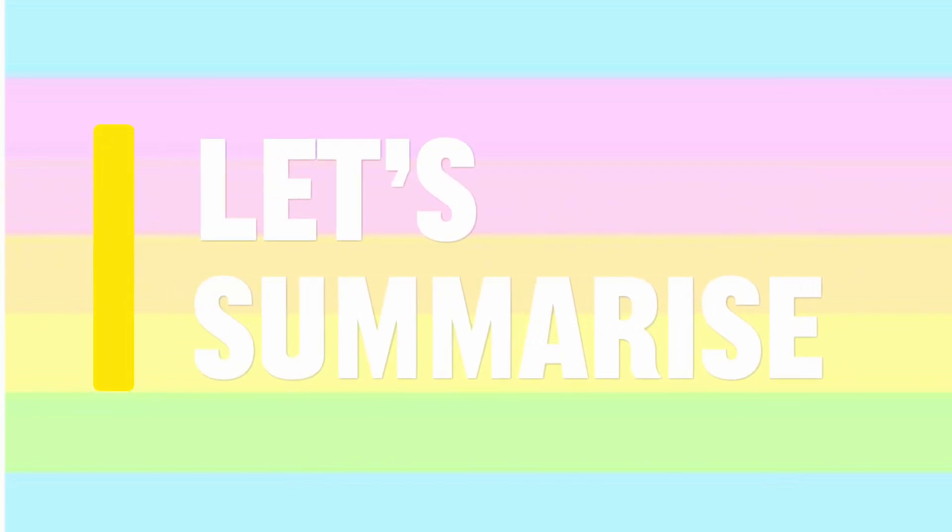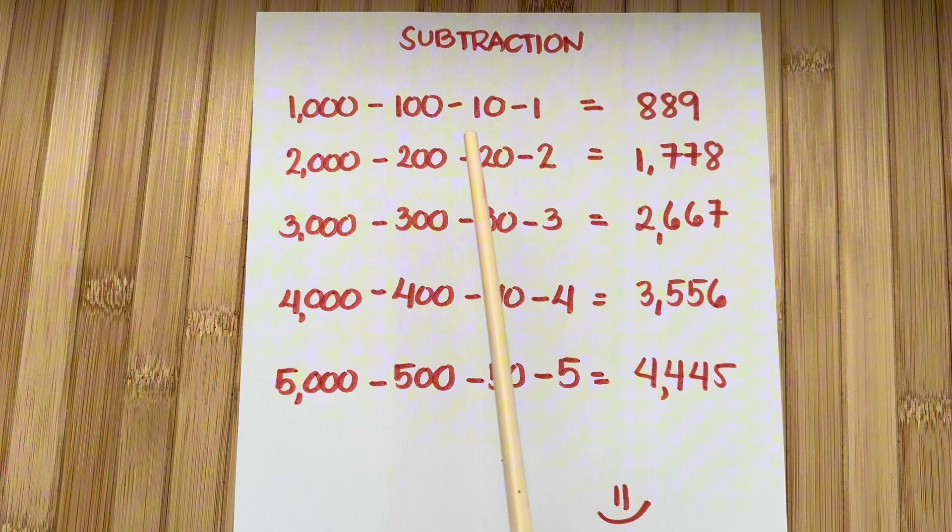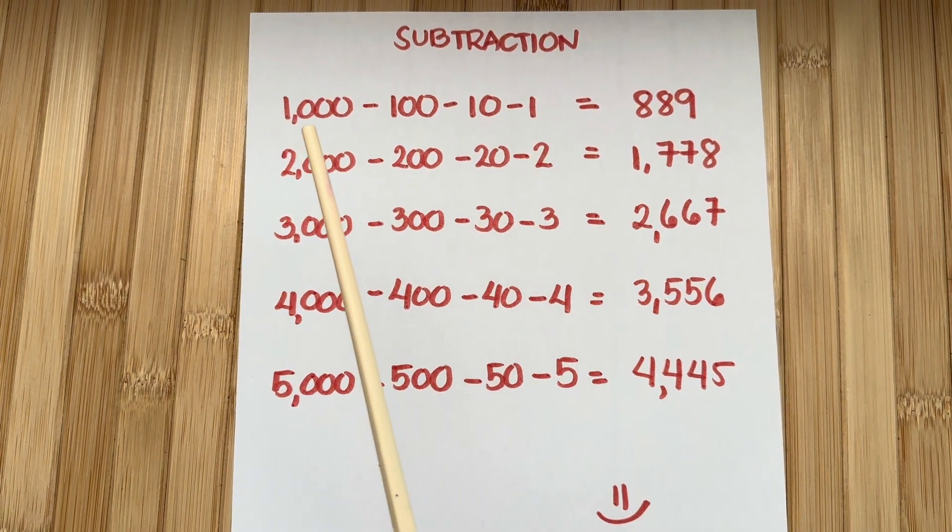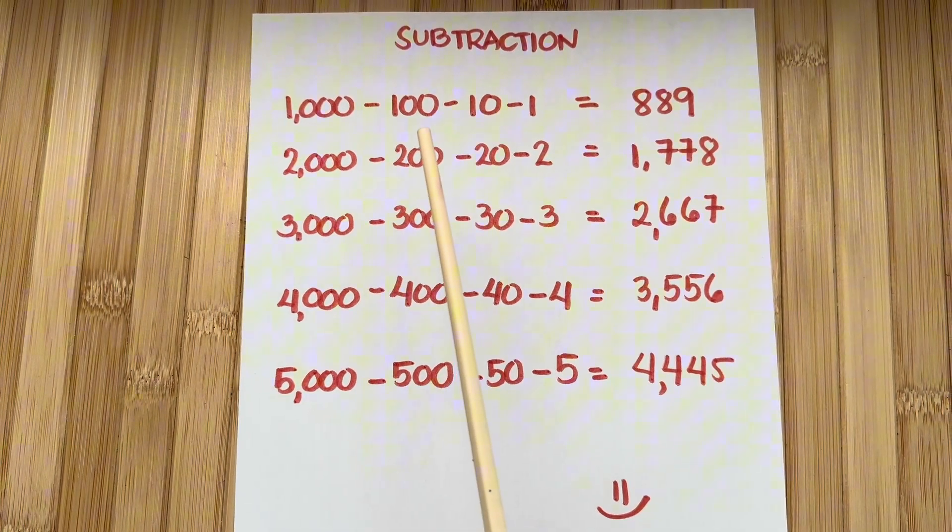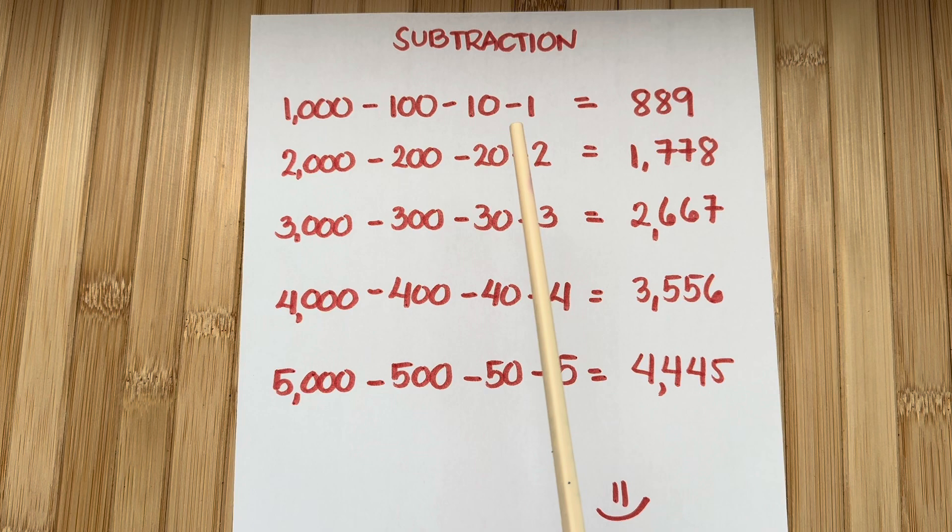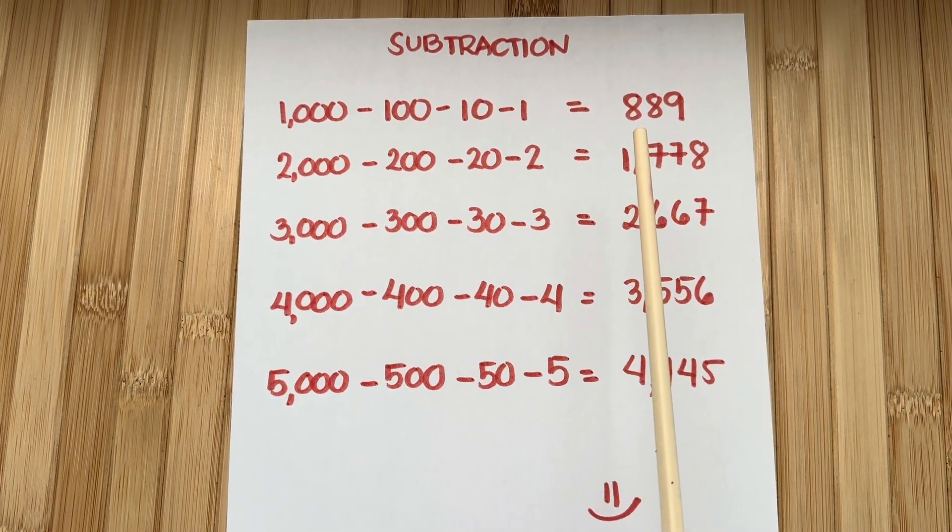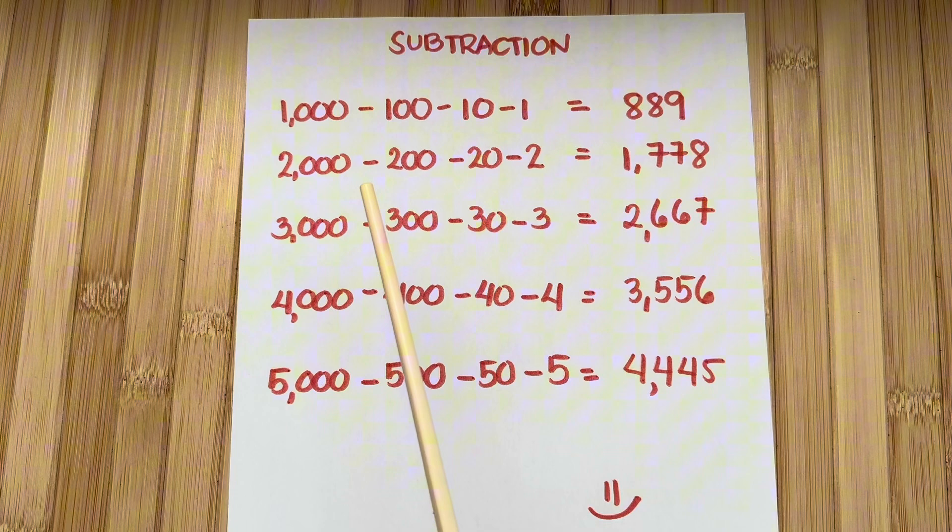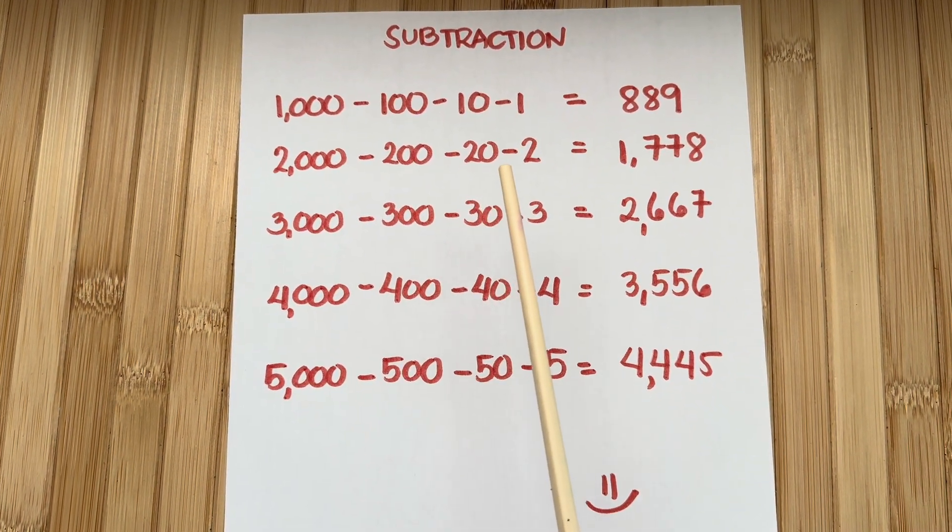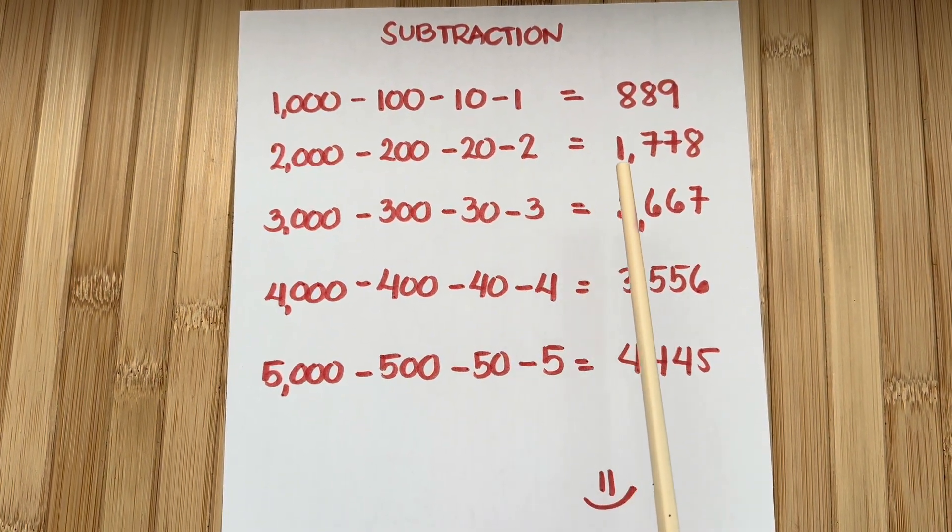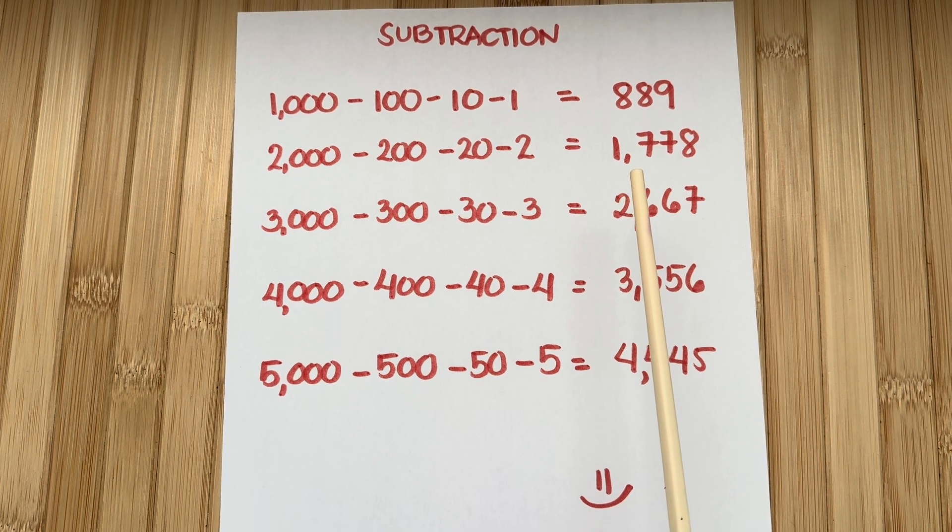Join me and let's summarize. Let's learn subtraction. 1,000 minus 100 minus 10 minus 1 equals 889. 2,000 minus 200 minus 20 minus 2 equals 1,778.